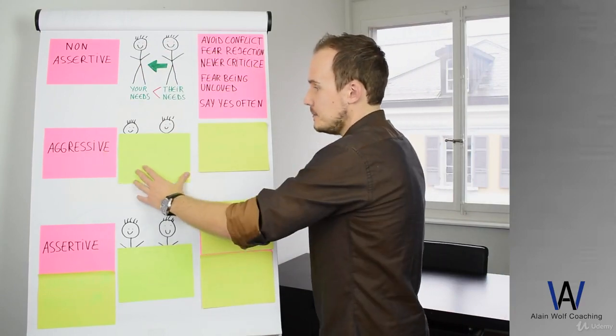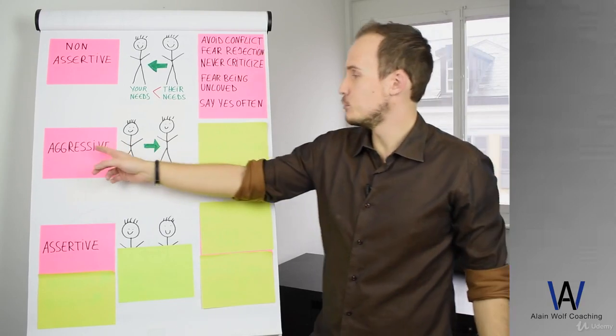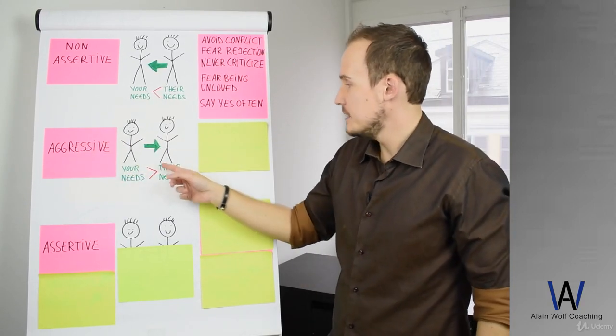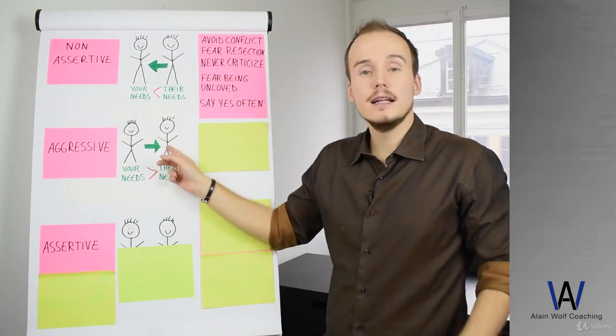The second communication style that you have here is when you are aggressive. Becoming aggressive is that you think that your needs are more important than the other people.